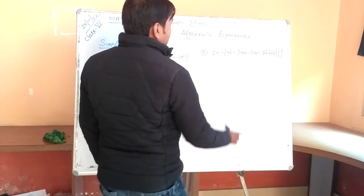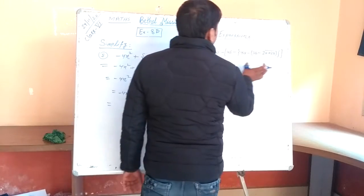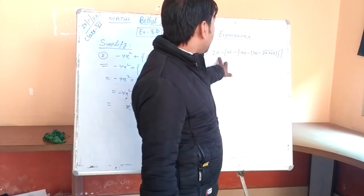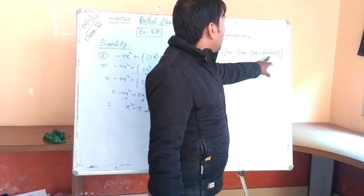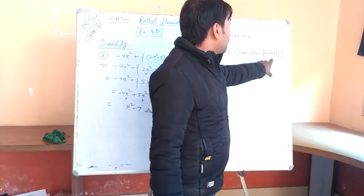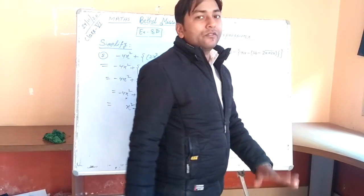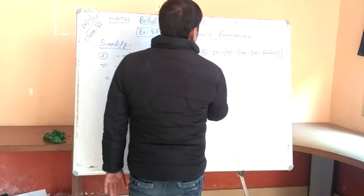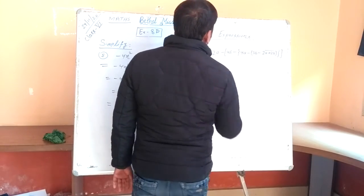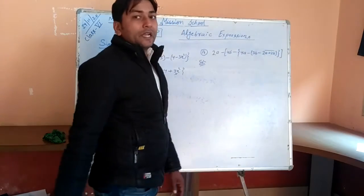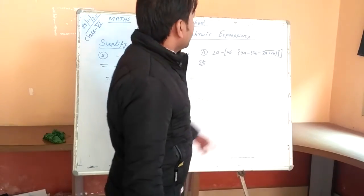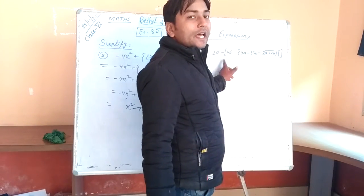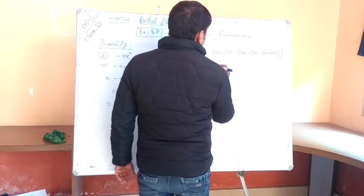Now, question 16 says: here, how many types of bracket are taken? There is bar bracket, small, curly, and deep bracket — four types of brackets have been taken here. So first we have to solve bar bracket, then smaller, then curly, and at last deep bracket.